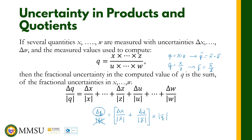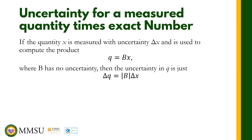Another rule is for uncertainty of a measured quantity times an exact number. If Q equals bX, where b is a constant, then the uncertainty is delta Q equals the absolute value of b times the uncertainty in X. That is the formula for the uncertainty in Q when given a product of a constant and a quantity.